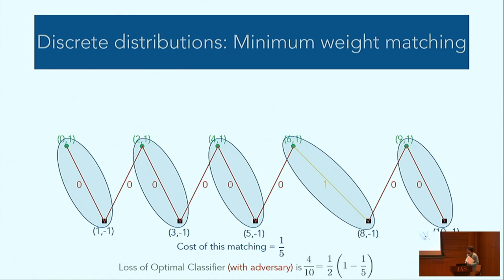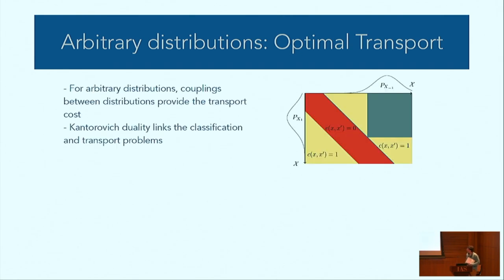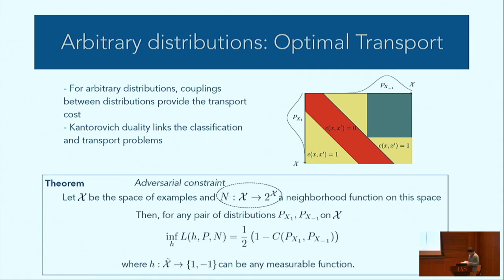You can get this relation not just for discrete distributions but for arbitrary distributions using optimal transport. The idea is to use couplings between distributions to compute the transport cost, and use the theory of Kantorovich duality to link the classification and transport problems. This gives our main theorem. The main takeaways are: you can find a lower bound on the loss by computing the cost and working out this expression, and since this is over all classifiers, it gives a lower bound on the loss for any particular family of classifiers. Moreover, the quantity on the right can actually be computed in cases of interest.